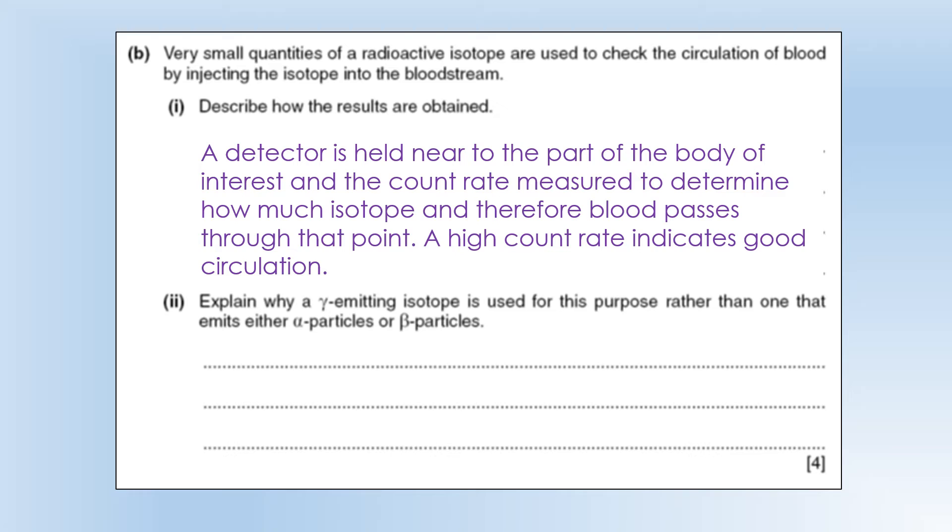and you measure the count rate. Because what should happen is if lots of blood is going through that point, you should get a high count rate, because that means lots of isotope is going through that point as well. So that tells you you've got good circulation, or if it's a low count rate, it tells you the circulation at that point is quite low.